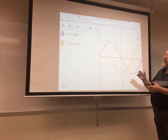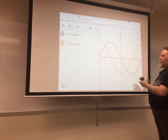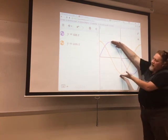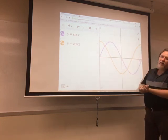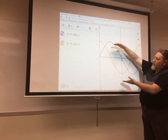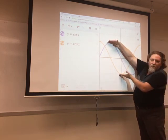And so sine and cosine have the same period of 2 pi. They also have the same height. And height, in this vocabulary, we call amplitude. Amplitude is half the distance from the top to the bottom.